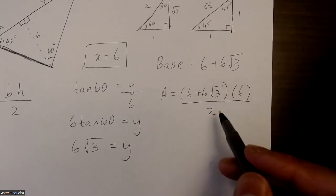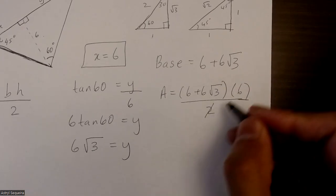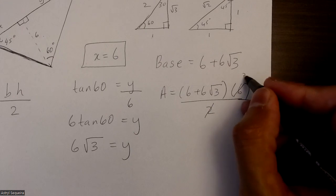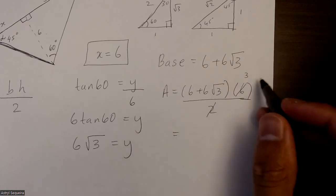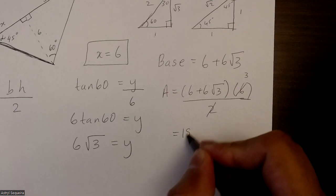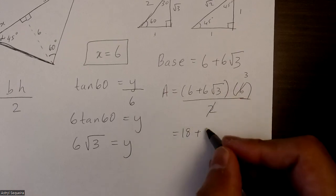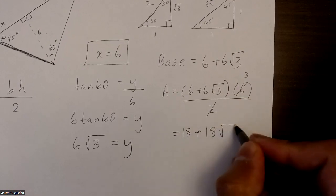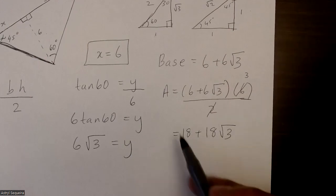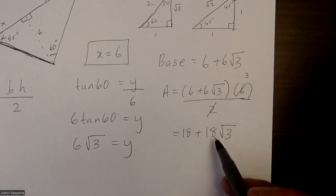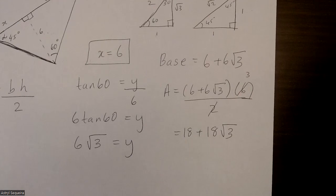Now I just need to simplify this. This 2 and this 6 can cancel, this will become a 3, and then if I multiply, 3 times 6 is 18 and 3 times 6√3 is 18√3. So the exact area of this triangle is 18 plus 18√3.